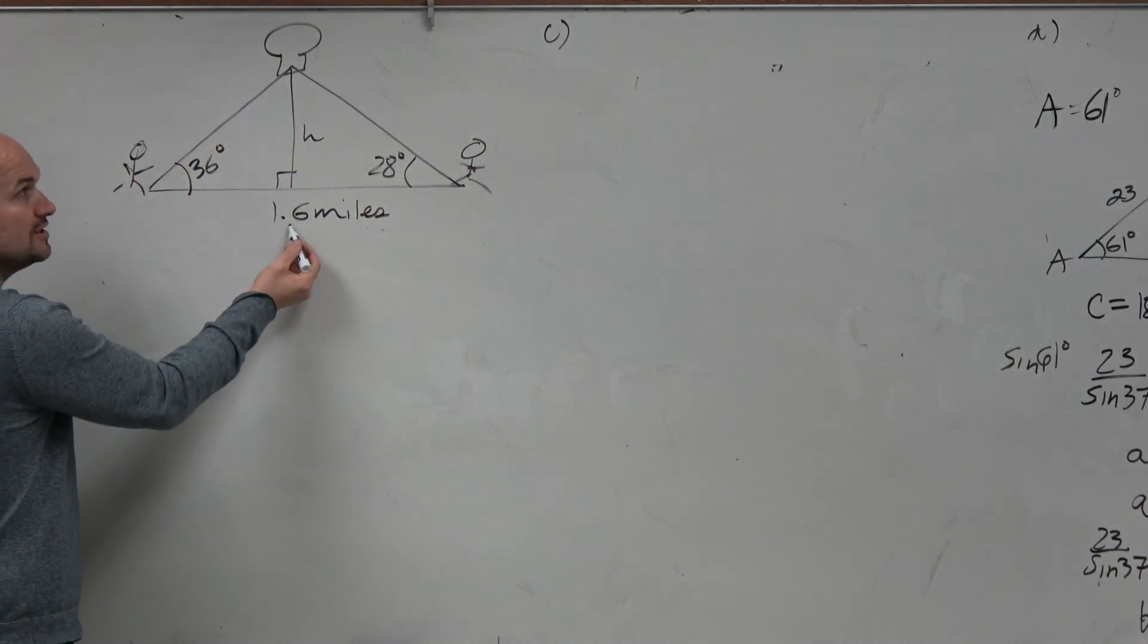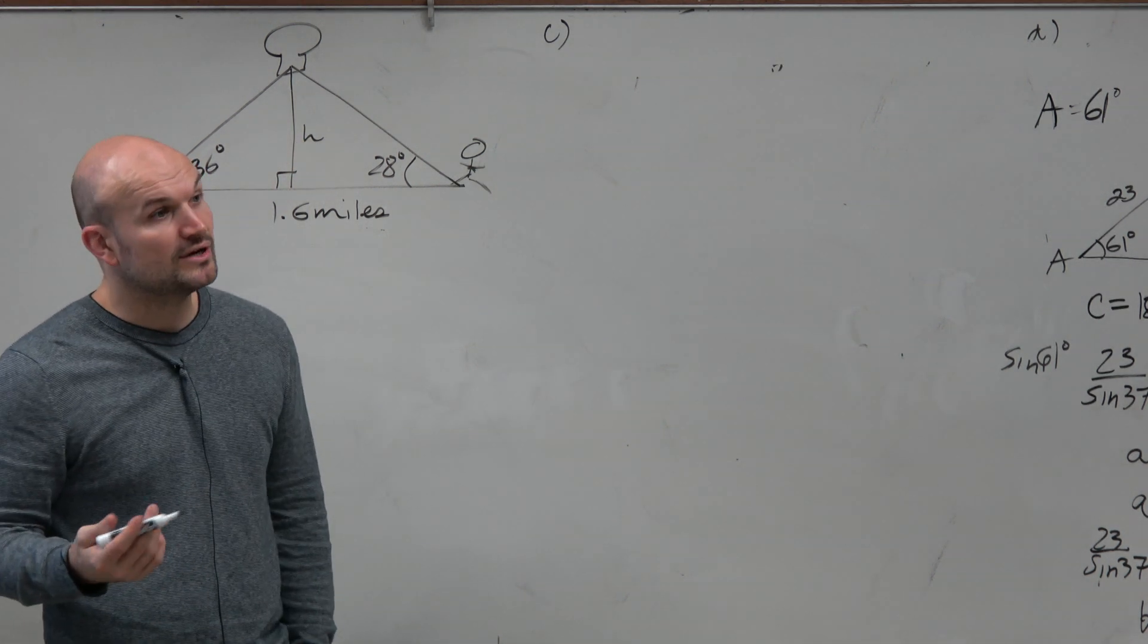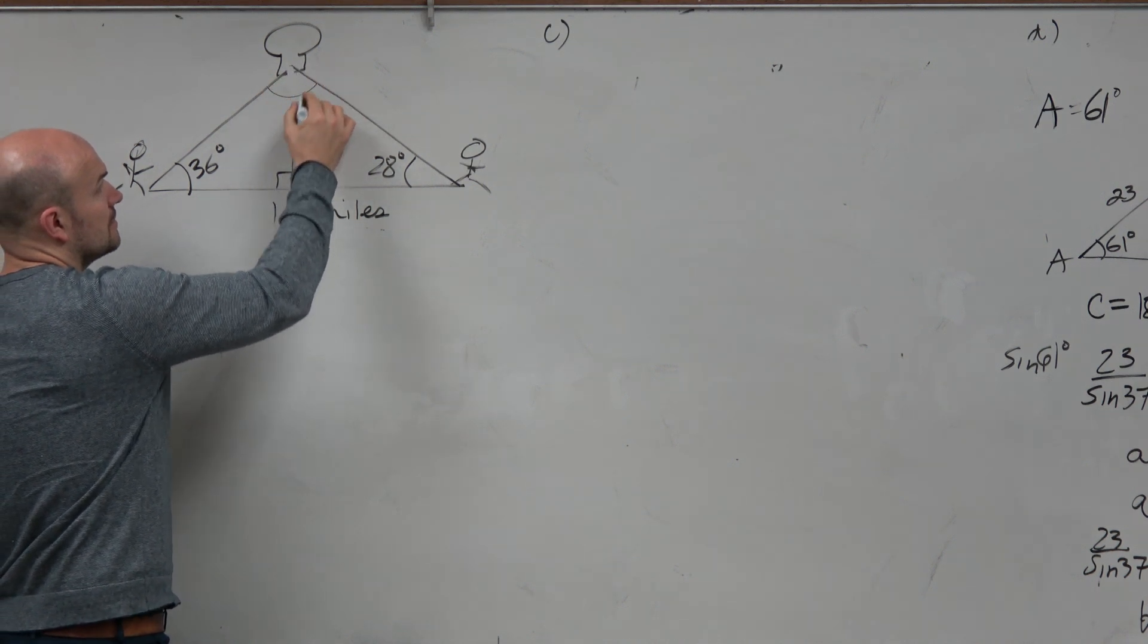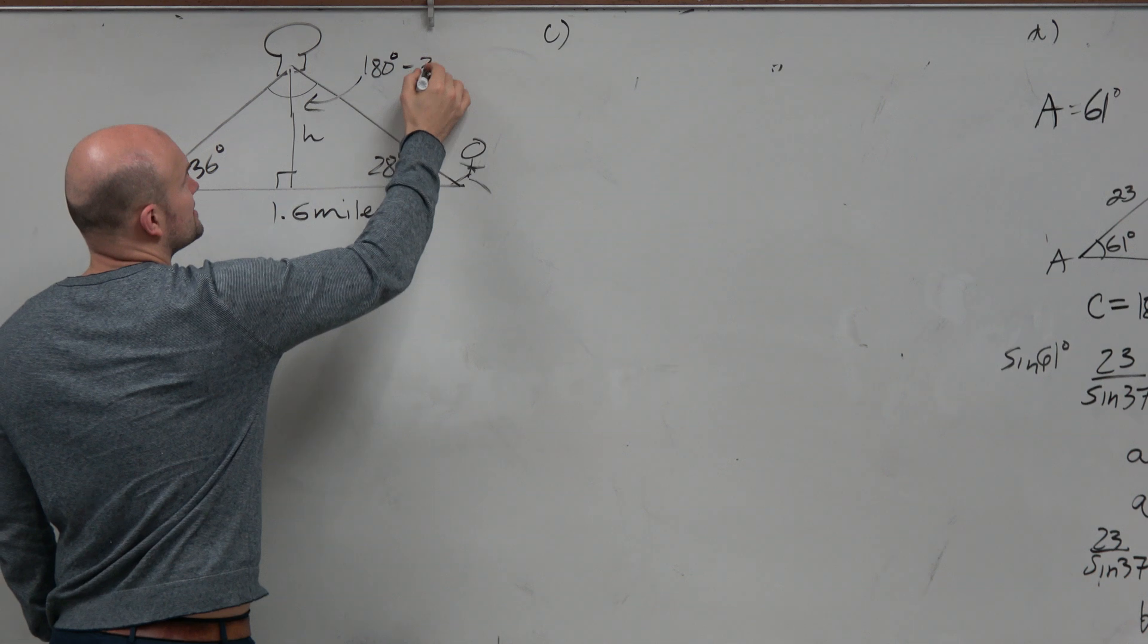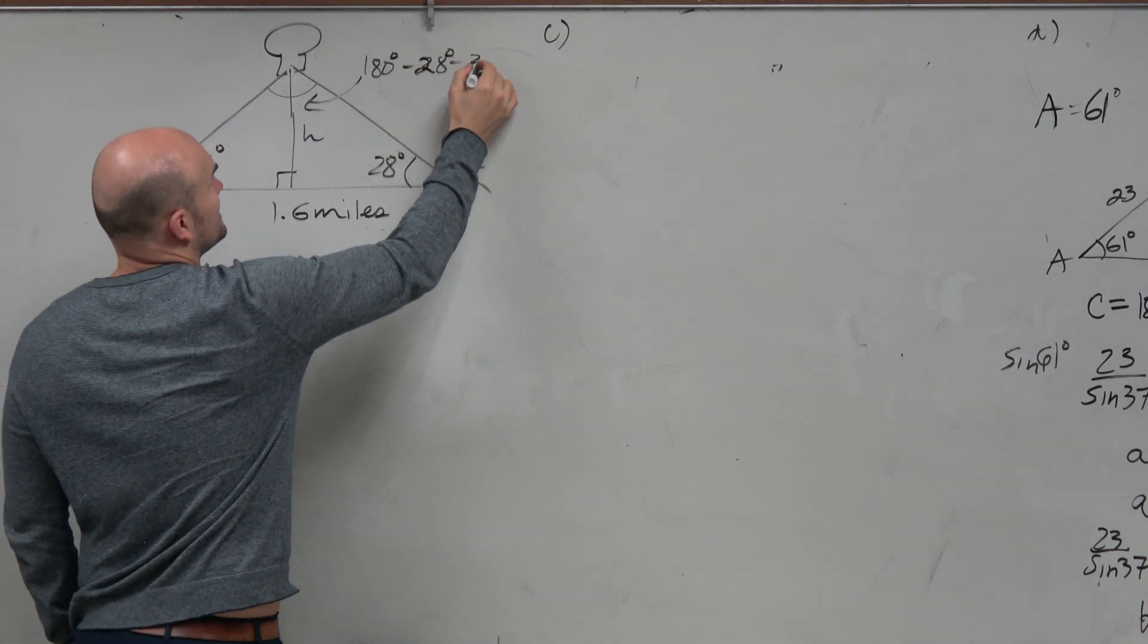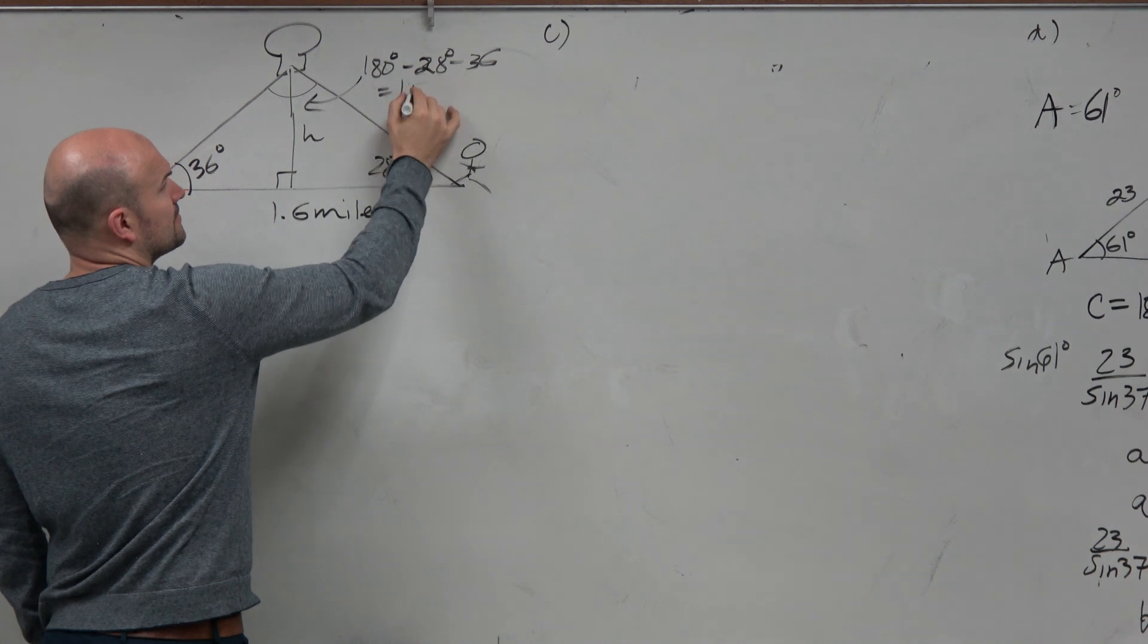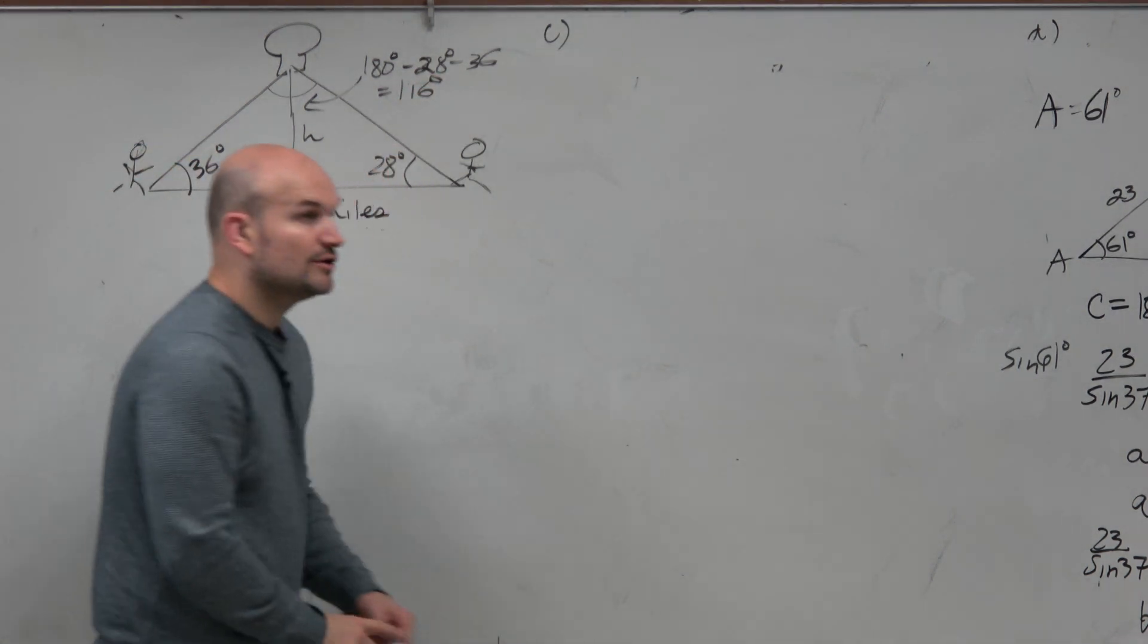But we do have a side length. If we could figure out this angle, then we could create a ratio. So do we know what this angle is? Oh, you guys figured it out. So 180 degrees minus 28 degrees minus 36 equals what? 116. Cool.